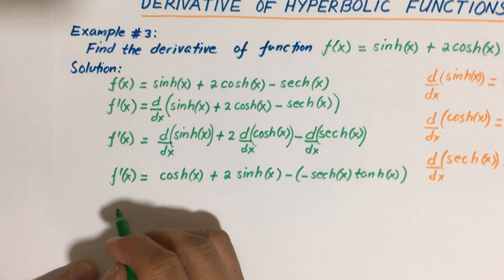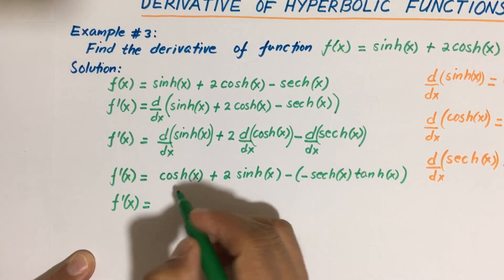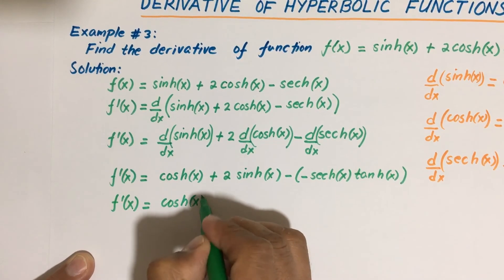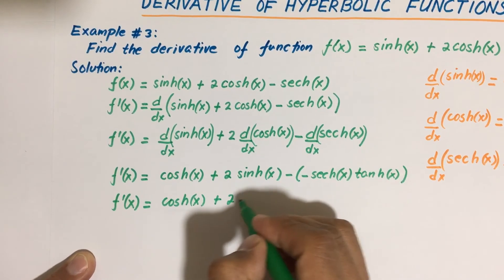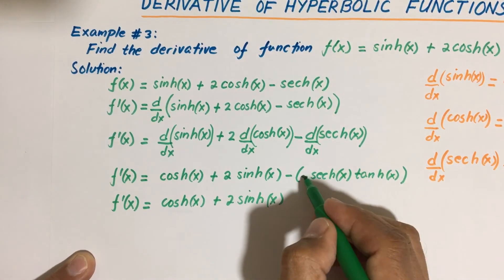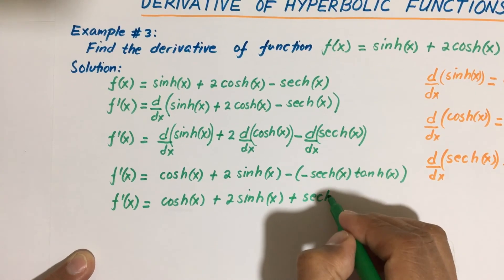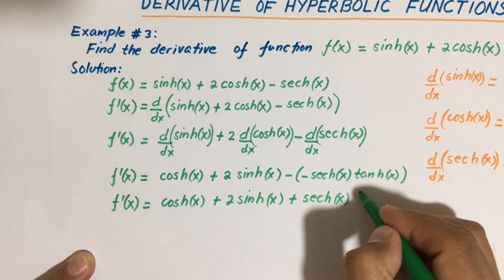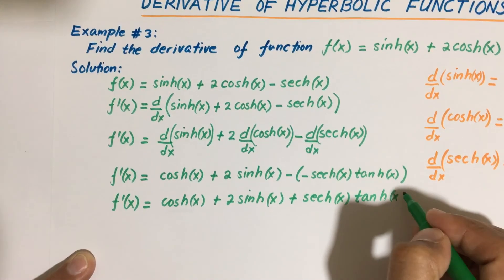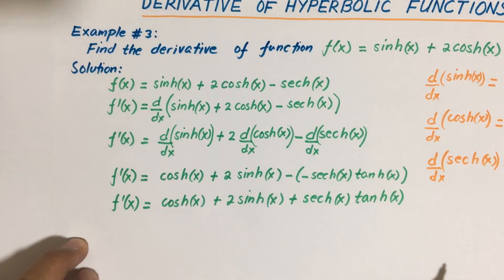So f prime of x is equal to hyperbolic cosine of x, plus twice the hyperbolic sine of x, then minus negative — which becomes plus — hyperbolic secant of x times hyperbolic tangent of x. This is our final answer.